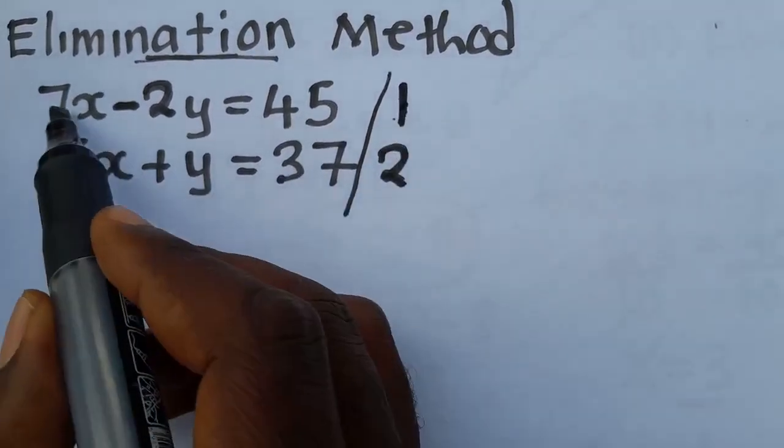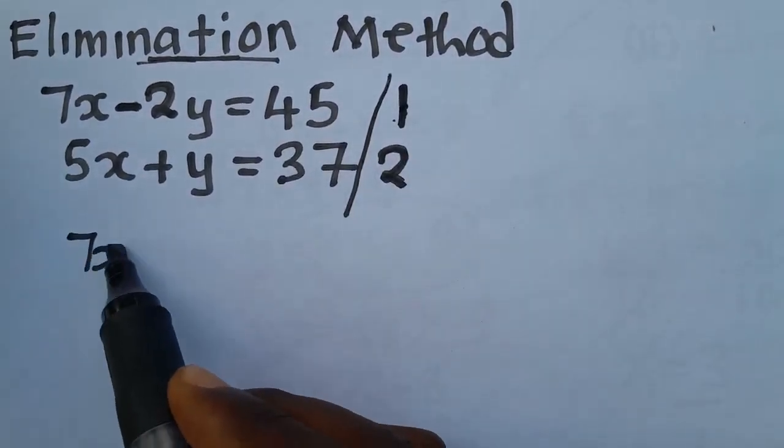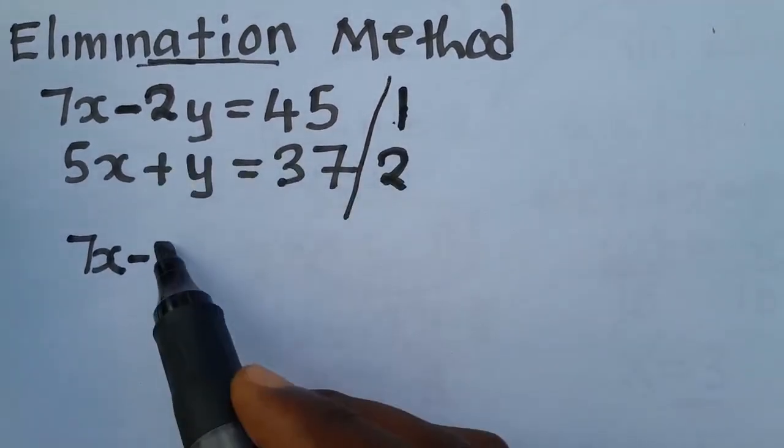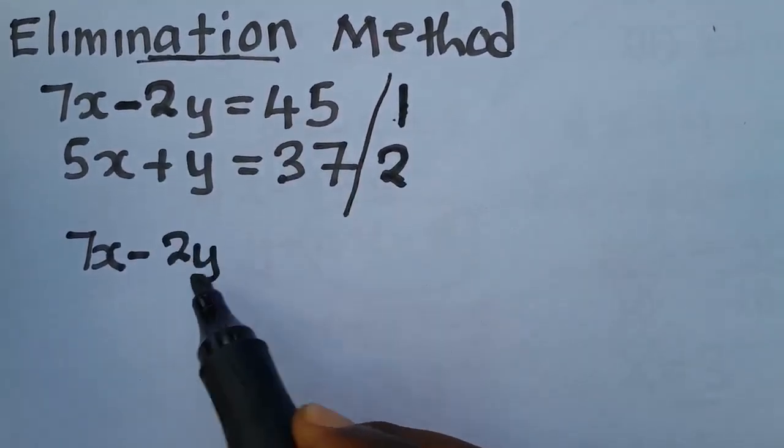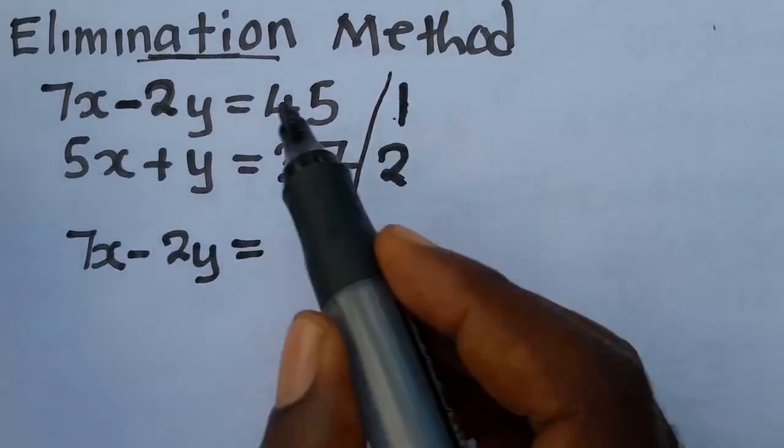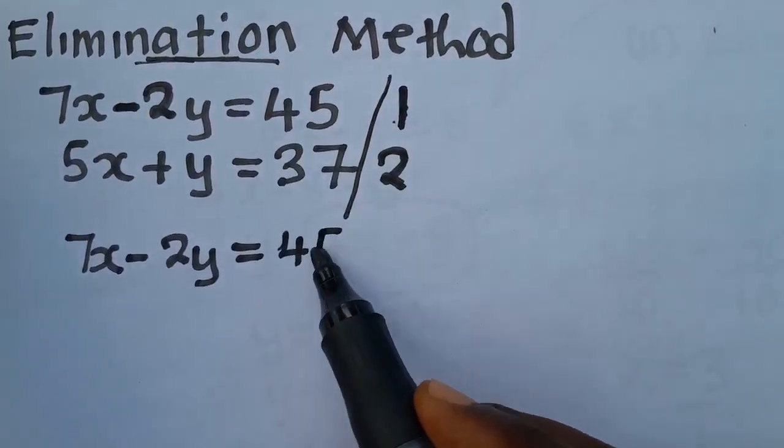What we are going to do is this. 1 times 7x, you are going to have 7x minus 1 times 2y, which is equal to 1 times 45, which is still the same.